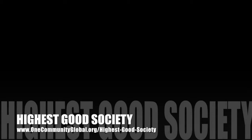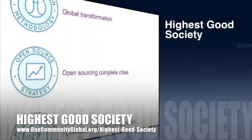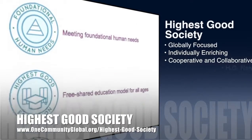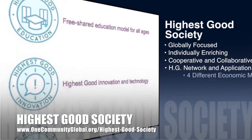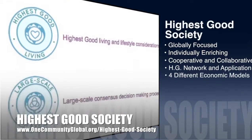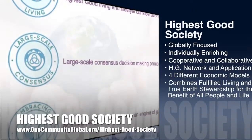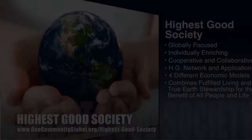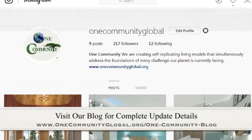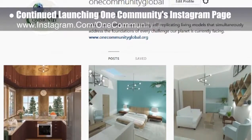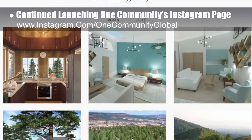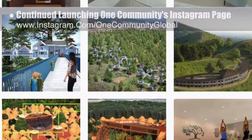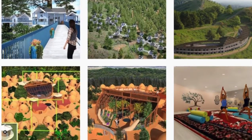One Community's approach to highest good society is globally focused, individually enriching, cooperative and collaborative. It includes a highest good network and application, four different economic models, and combines fulfilled living and true earth stewardship for the benefit of all people and all life on this planet. This week the core team continued launching One Community's Instagram page — downloading additional images, creating a new Instagram spreadsheet to track hashtags, and adding the first nine images to the account.